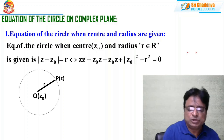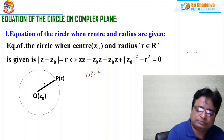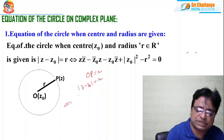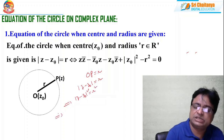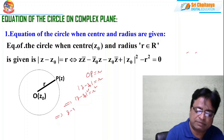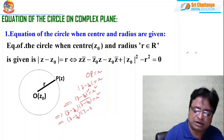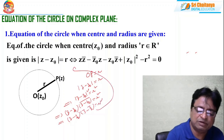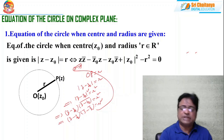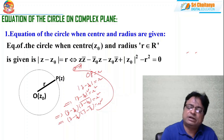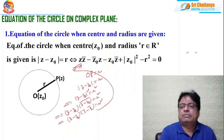As per the diagram, OP = r, meaning |z − z₀| = r. Squaring both sides: |z − z₀|² = r². Using the property |z|² = z·z̄, this becomes (z − z₀)(z − z₀)̄ = r², which expands to (z − z₀)(z̄ − z₀̄) = r². Simplifying: zz̄ − z₀̄·z − z₀·z̄ + |z₀|² − r² = 0.